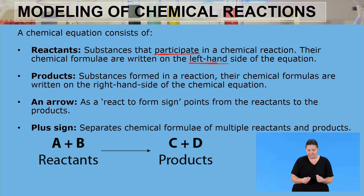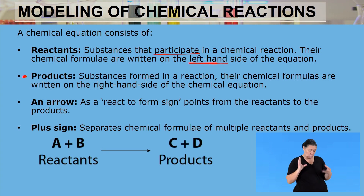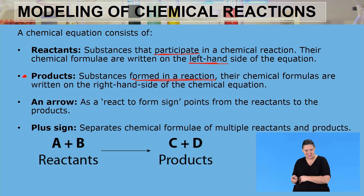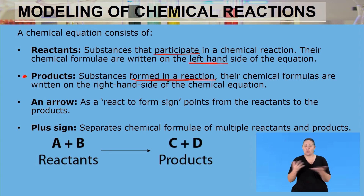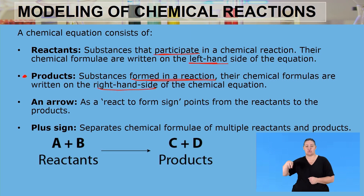The second item is products. Products are substances that are formed in a chemical reaction, and their chemical formulas are written on the right-hand side of the equation. So on the left-hand side we have the reactants, and on the right-hand side we have the products.